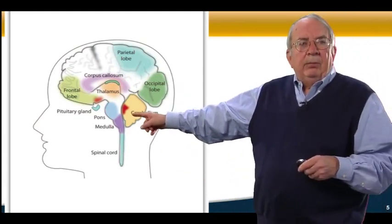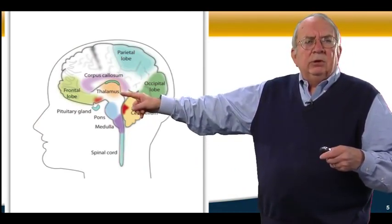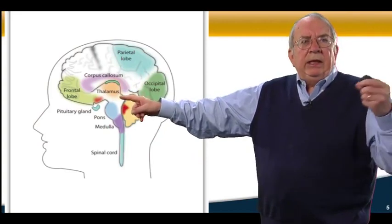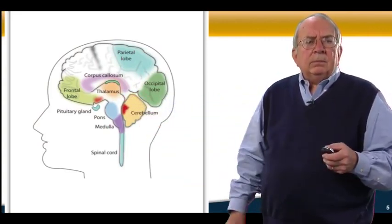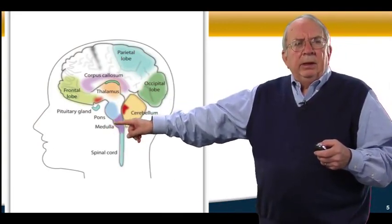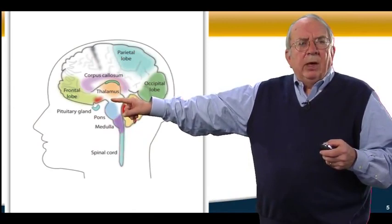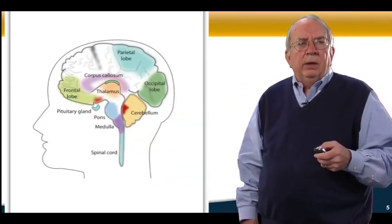There's the cerebellum in the hindbrain, that's primarily movement and motion. There's the thalamus, which is the relay station for getting information up to the cortical areas, and then you can see the hindbrain, the pons, and the medulla. It doesn't show the hypothalamus, but it's right there between the thalamus and the pons and the spinal cord.